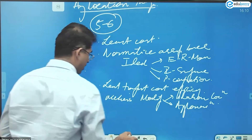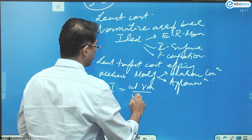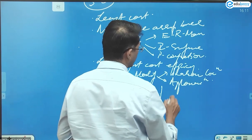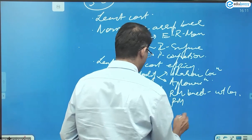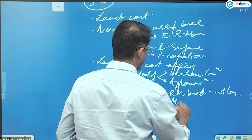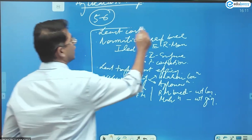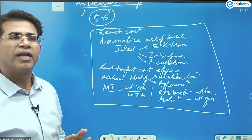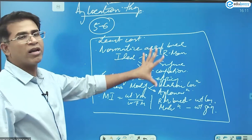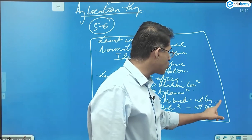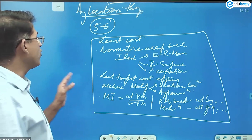Weber's modifications involve labor location and agglomeration. Also important is the concept of the Material Index, which is the weight of raw materials divided by the weight of finished products. This gives us raw material-based industries — weight-losing — and market-based industries — weight-gaining. Put all this in a quick box to show the examiner you know the concept. Mention one or two examples as well.